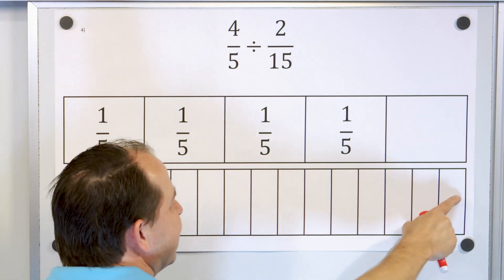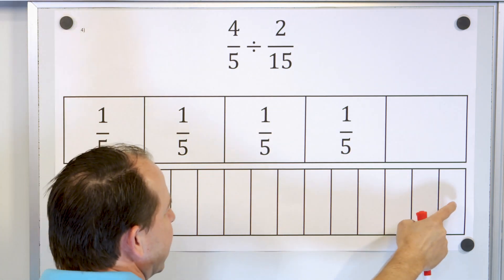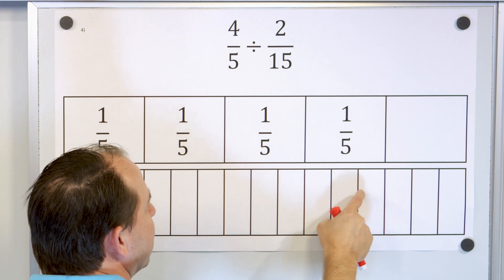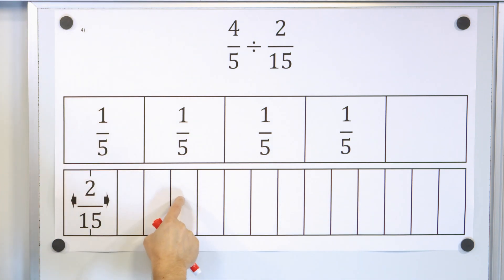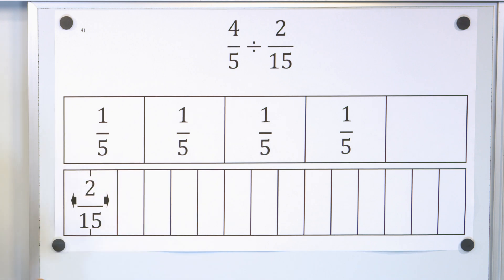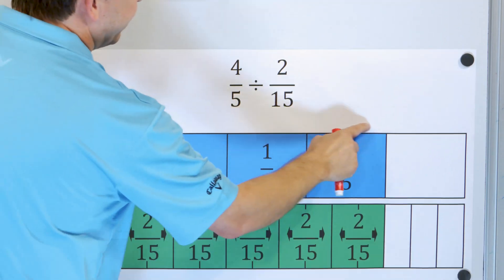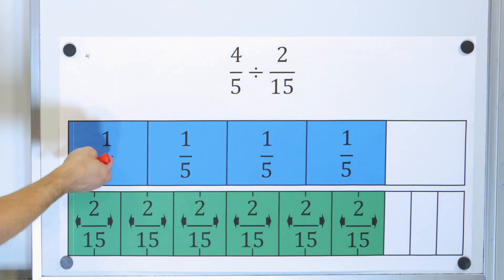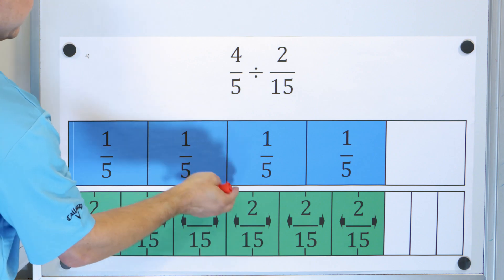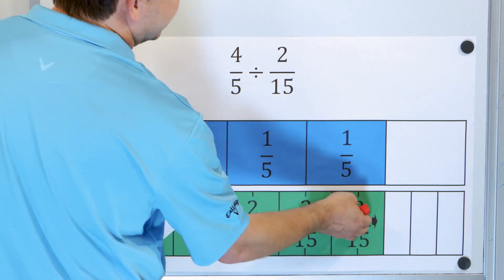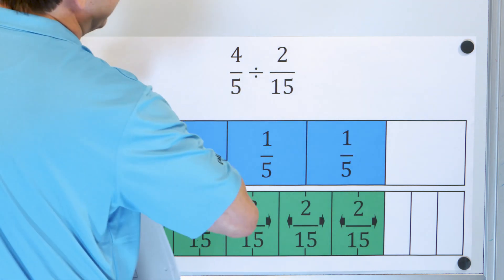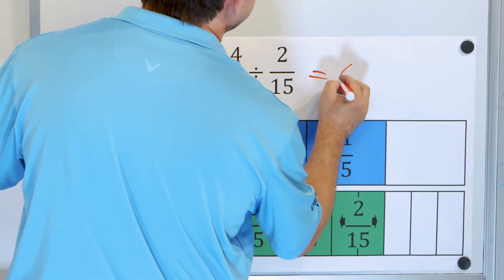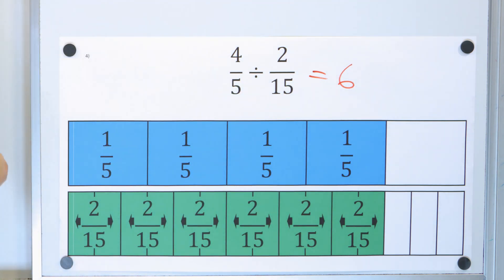And then two-fifteenths: we cut this into fifteen equal pieces and we have two of them, so that's two-fifteenths. How many times will this fit in there? Well, if we have four-fifths, two-fifteenths will go in one whole time, then two, then three, then four, then five, then six whole times. Notice the boundary lines up exactly, so the answer to this one is six whole times.